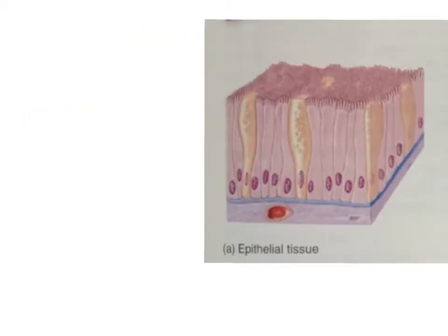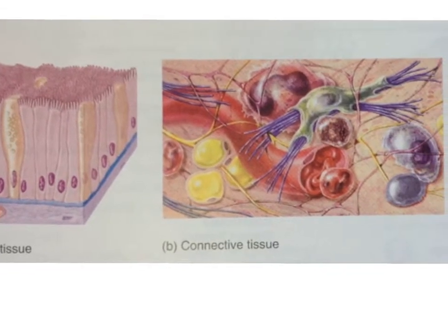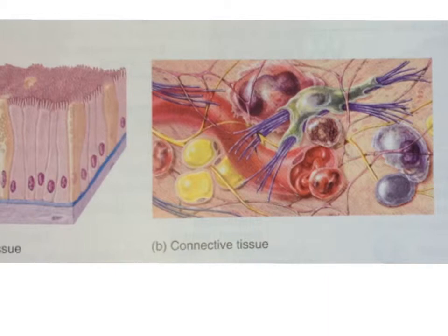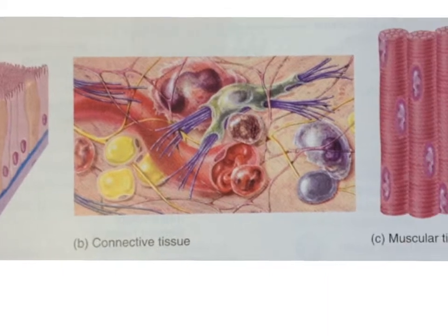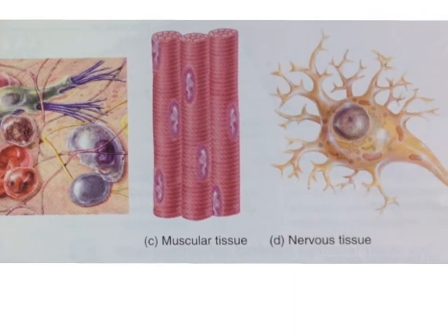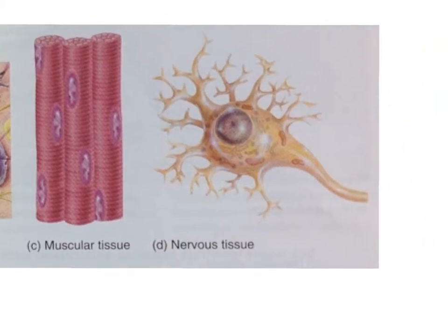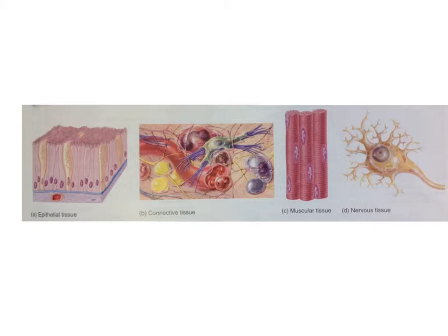There are four basic types of tissues in the human body: epithelial tissue, connective tissue, muscular tissue, and nervous tissue. These types of tissues are organized based upon their structural and functional differences.